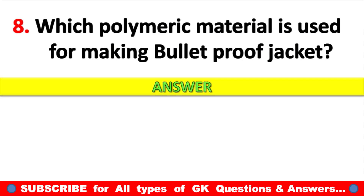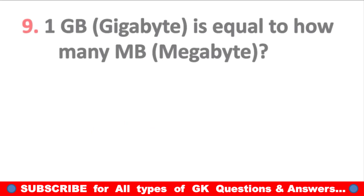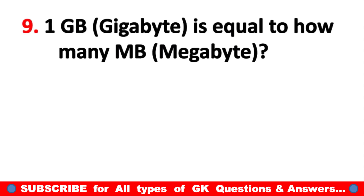Question 8: Which polymeric material is used for making a bulletproof jacket? Answer: Kevlar.